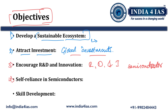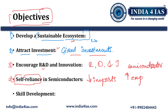The fourth objective is, through ecosystem development, attracting investments, and encouraging research and innovation in semiconductor fabrication, design and manufacturing, it wants to make India self-reliant in semiconductor fabrication. Through that, it aims to reduce imports and increase exports, especially in semiconductor chips. The fifth objective is to upskill engineers, scientists and researchers in semiconductor technologies and create a talent pool to support the semiconductor industry.